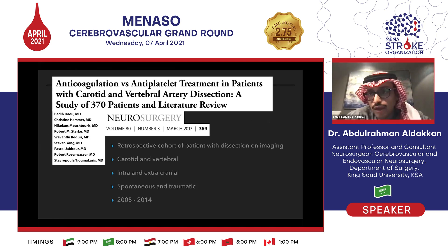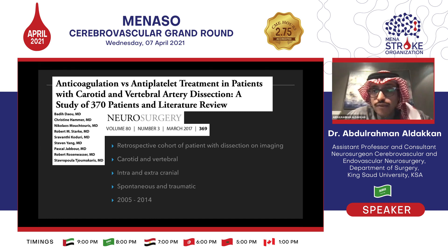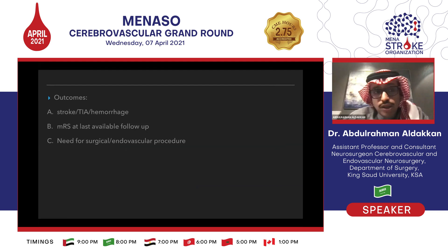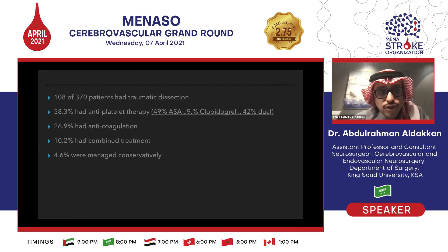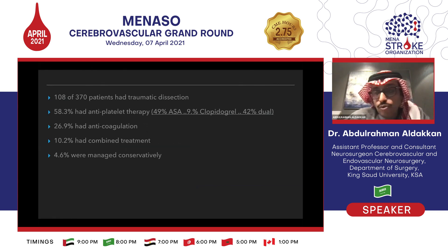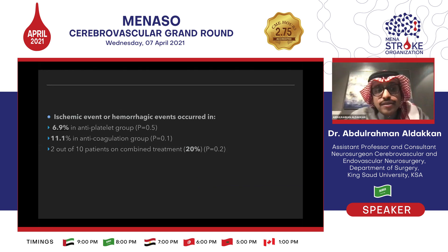Another paper, published in 2017 in Neurosurgery, was a retrospective cohort that confirmed the same findings as the CADAS trial. This study included carotid and vertebral dissections, both intra- and extracranial, spontaneous and traumatic. Outcomes were stroke or TIA or hemorrhage, modified Rankin scale at last available follow-up, and need for surgical or endovascular rescue procedure. Of 108 patients with traumatic dissection, 58% had antiplatelet therapy — the majority aspirin or dual antiplatelet — 26% had anticoagulation, 10% had combined treatment, and 4% were managed conservatively. The ischemic event rate did not significantly differ between groups: approximately 7% in the antiplatelet group and 11% in the anticoagulation group.